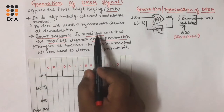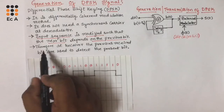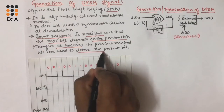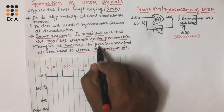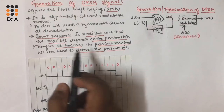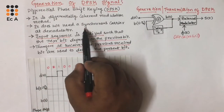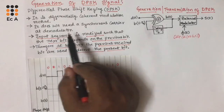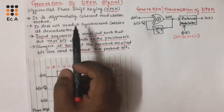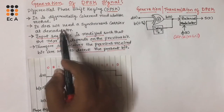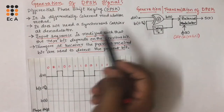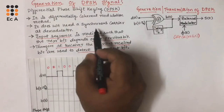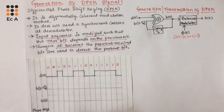The input sequence is modified in such a way that at the receiver end, the previous received bit is used to detect the present bit. That is why DPSK does not require a synchronous carrier at the receiver end. So the first difference between BPSK and DPSK is that DPSK does not require any synchronous carrier at the demodulator end, but BPSK requires the synchronous carrier at the receiver end to demodulate the signal.